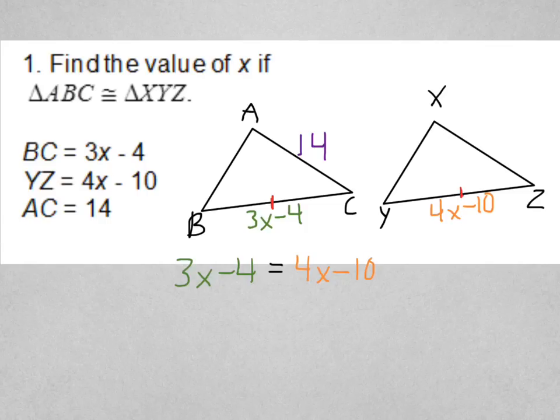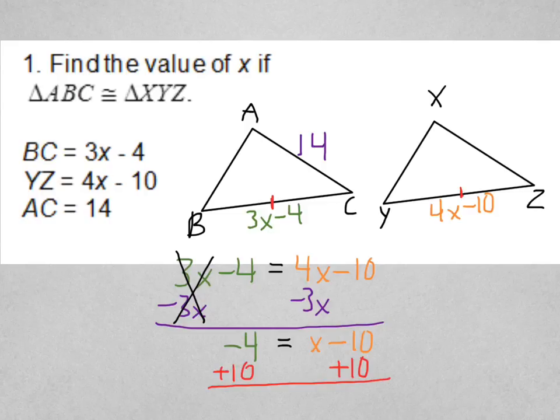That means that 3X minus 4 is equal to 4X minus 10. Hopefully you guys are really used to solving these kinds of equations by now. I would subtract the smaller X from both sides, giving me negative 4 equals X minus 10. I would then move the numbers to the other side, so add 10 to both sides, giving me X equals 6. That's what it asked for. That's what I got, X equals 6. If I wanted to, I could plug it in and check if I got it right.